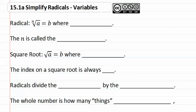15.1a: simplify radicals with variables. As you can see here, we have a radical and there's a little letter n out front. The n is called the index.